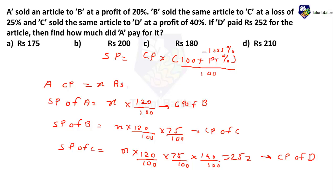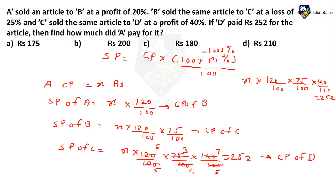When you understand the concept, you directly write: cost price of A is X, on that 20% profit means × (120/100), on that 25% loss means × (75/100), on that 40% profit means × (140/100), and D paid 252. Simplifying: X × (120 × 75 × 140) / (100 × 100 × 100) = 252. Solving the equation gives X = 252 × (100³) / (120 × 75 × 140) = 200. So the cost price of A is 200 rupees.